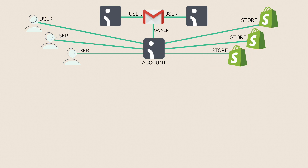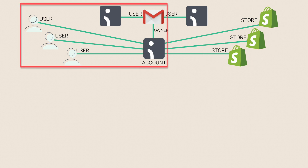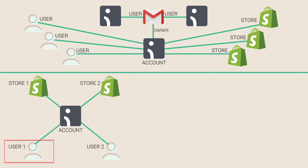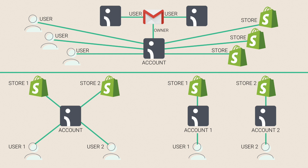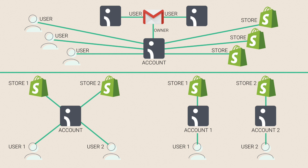An important detail to keep in mind is that users are added to the account, not to the stores. So in the first case, user 1 and user 2 will both have access to store 1 and store 2. In the second case, since the two stores are connected to two different OmniSend accounts, user 1 will only have access to store 1 and user 2 will only have access to store 2. Keeping this in mind, you'll be able to set up your account and stores the way you need for your business.